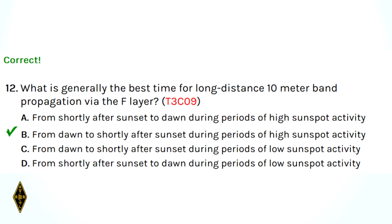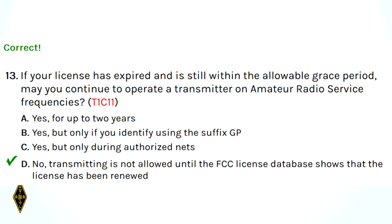Question 12: what is generally the best time for long-distance 10-meter band propagation via the F layer? We're at the bottom of the sunspot cycle, but 10 meters likes lots of sunspots and is a daytime band. So the answer is from dawn to shortly after sunset during periods of high sunspot activity — daytime, high sunspots, 10 meters. Question 13: if your license has expired but is still within the allowable grace period, may you continue to operate? No — 13D. Transmitting is not allowed until the FCC license database shows the license has been renewed, which you can do online.